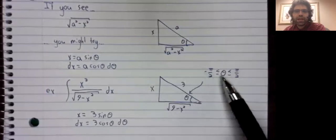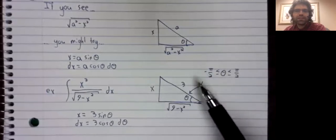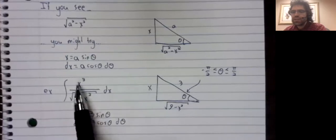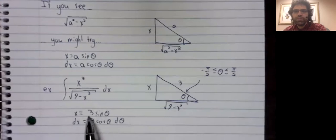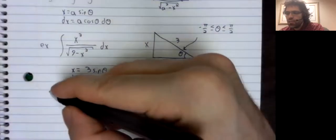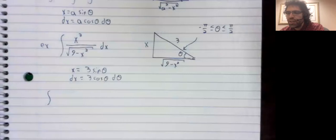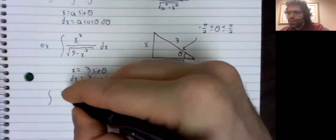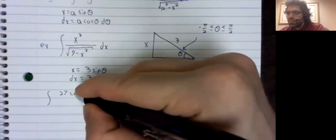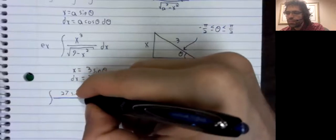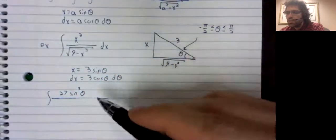For now it's hard to see what that gets us. Let's just plug this x into this integral and this dx into this integral and see what happens. The integral of 27 times the sine cubed of theta times dx.